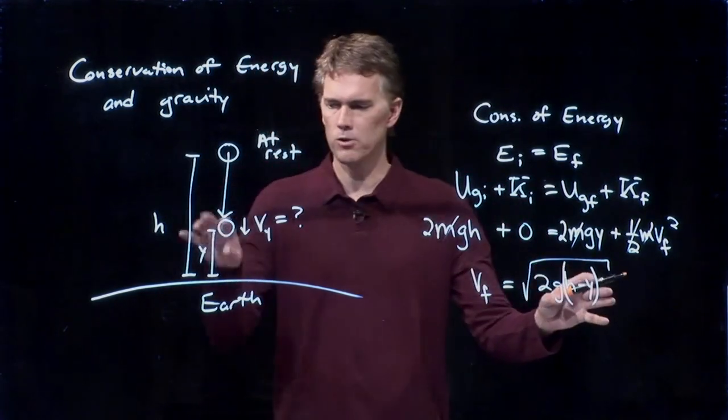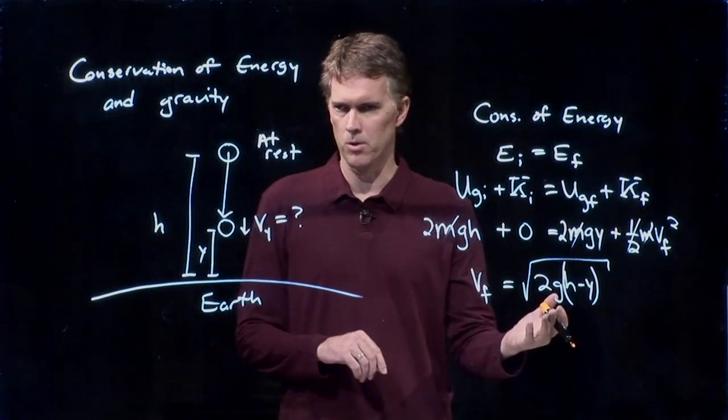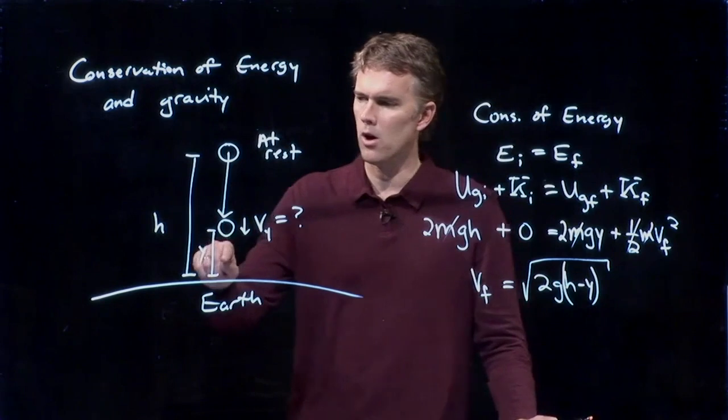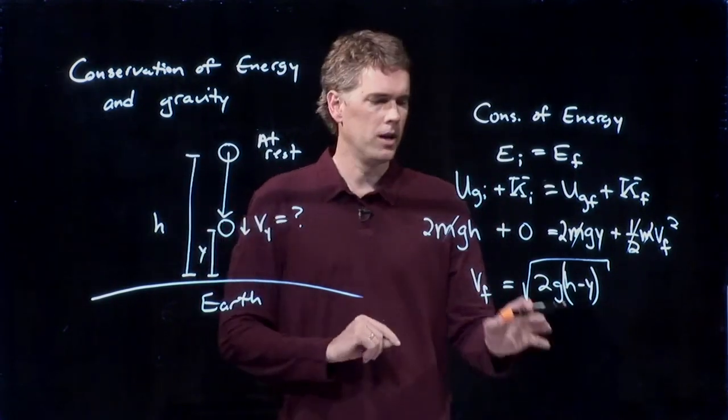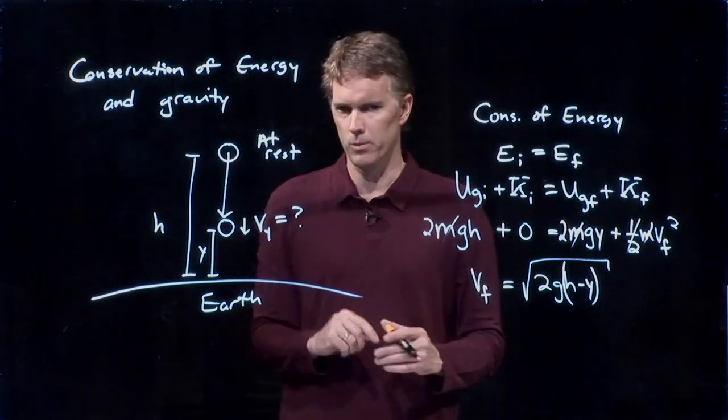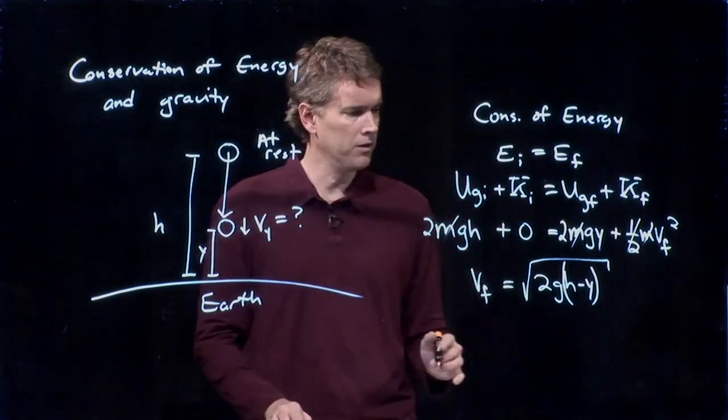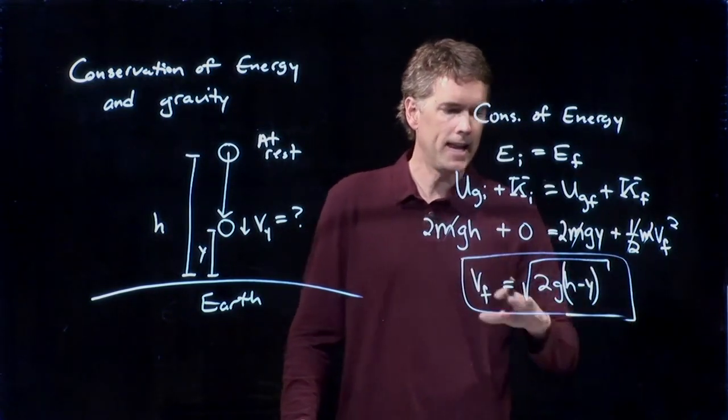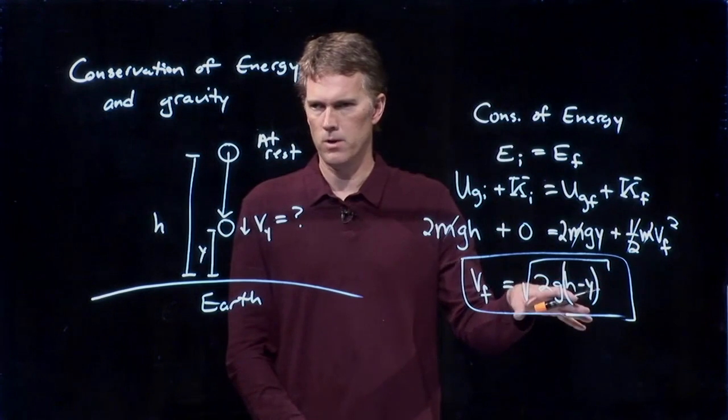If y goes back to zero, then we're back to our good old square root of 2gh. If y goes all the way up to h, it says that v_f is zero. And that makes sense. You haven't moved anywhere yet. So this is a very nice way to get to the final speed at any height y that you want.